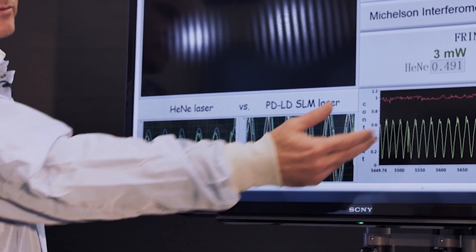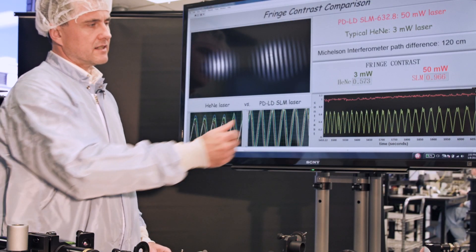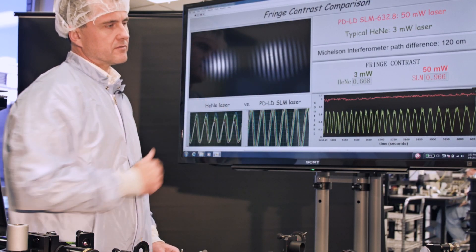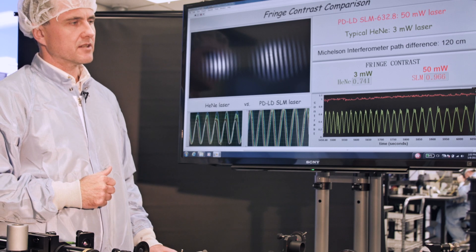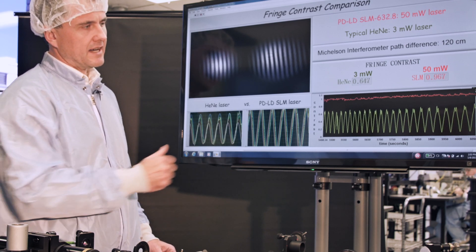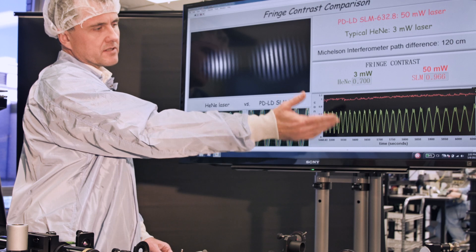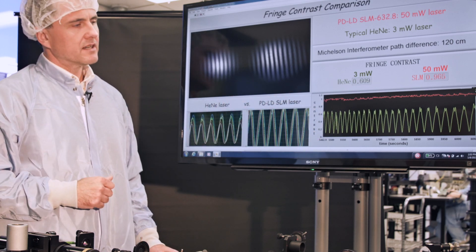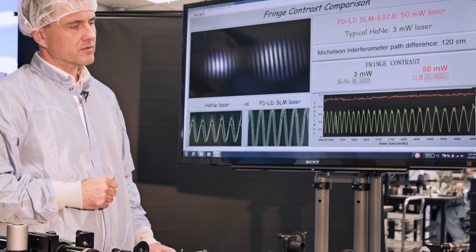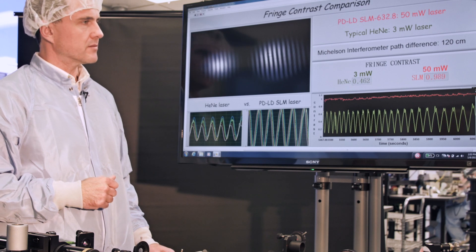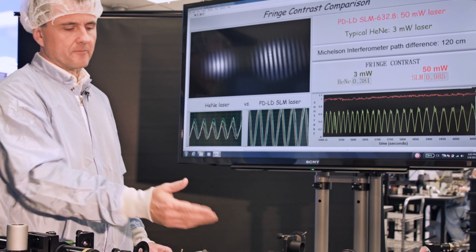And they are plotted as a function of time on this graph. One can see that fringe contrast of the interference pattern produced by SLM series laser diode is very high and constant with time, whereas fringe contrast produced by helium-neon laser is variable with time and will also depend on the path length difference of the interferometer.